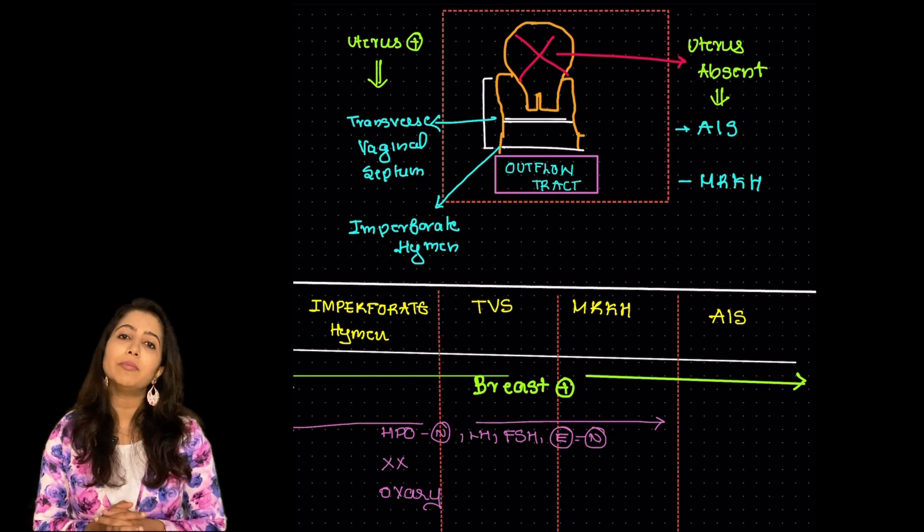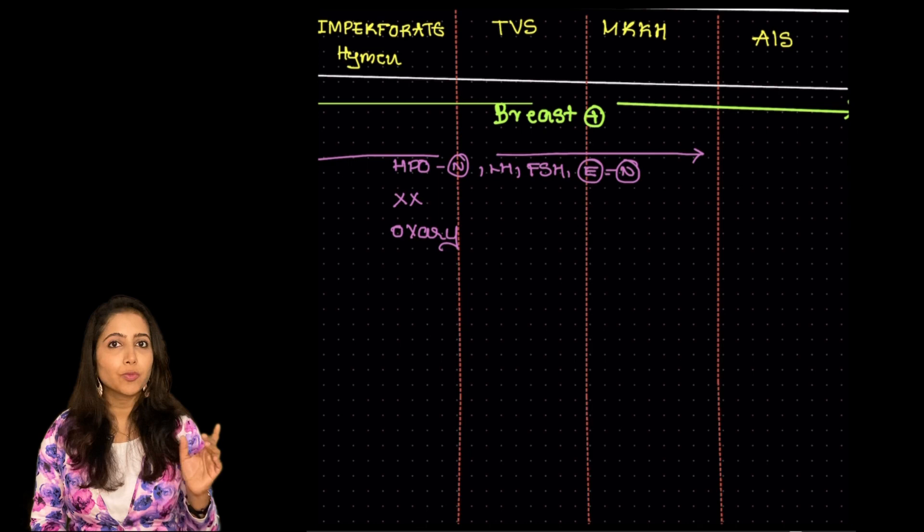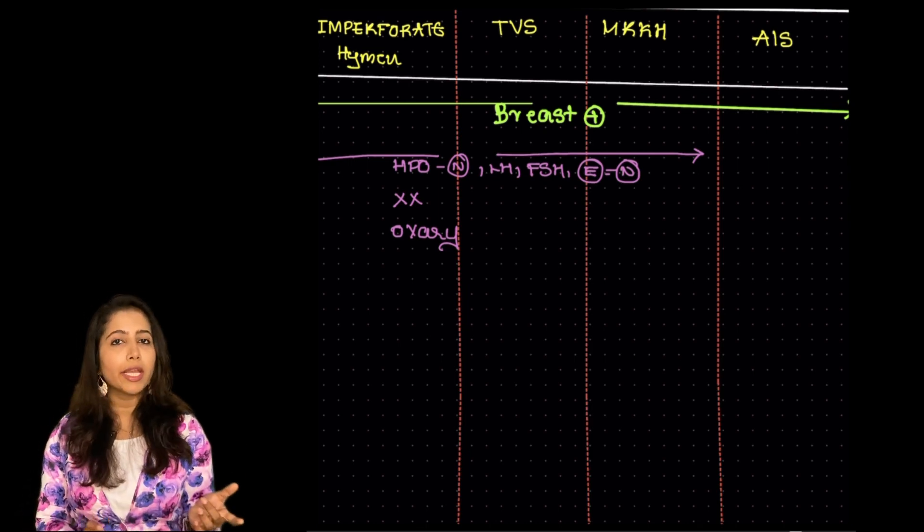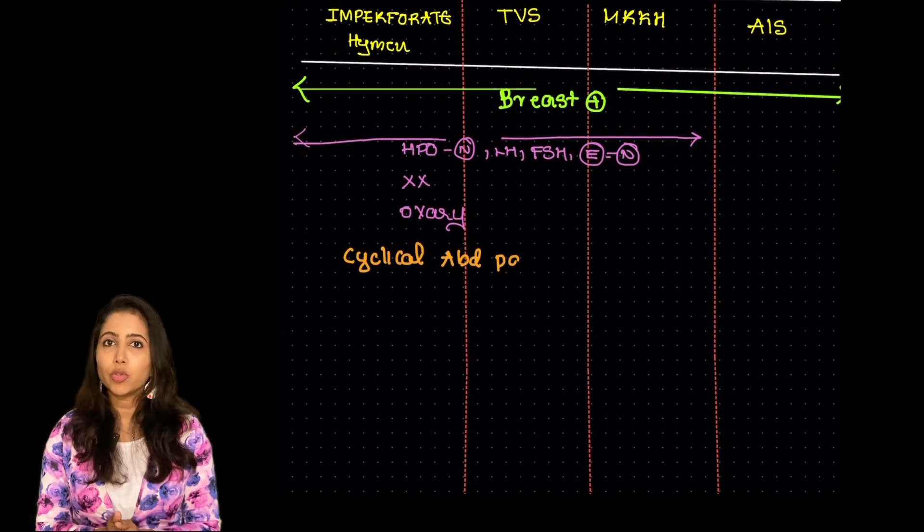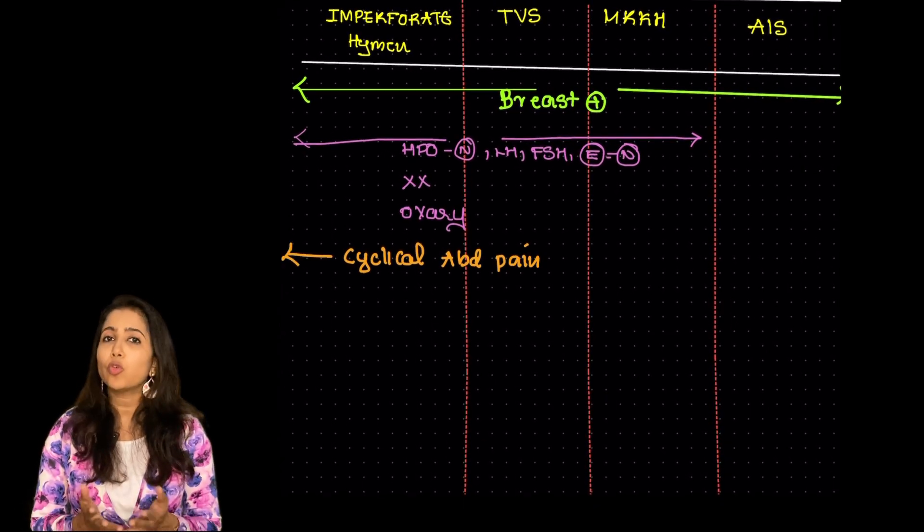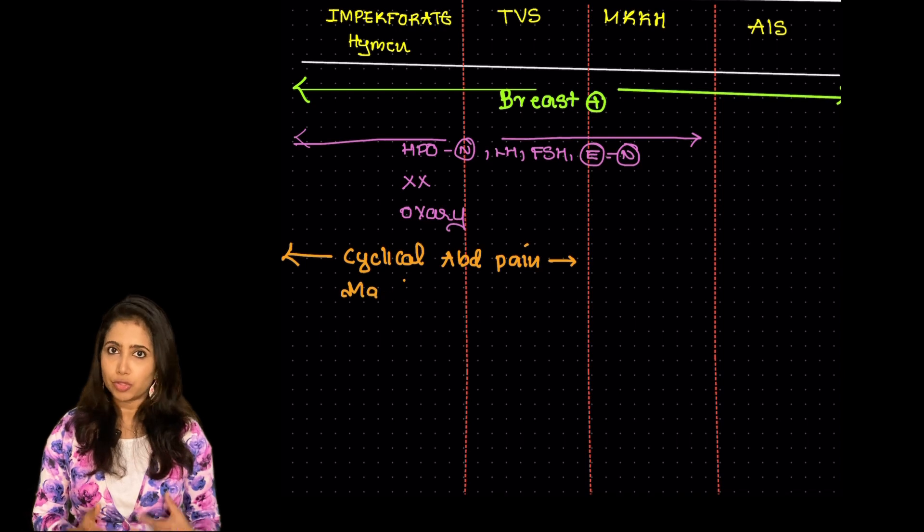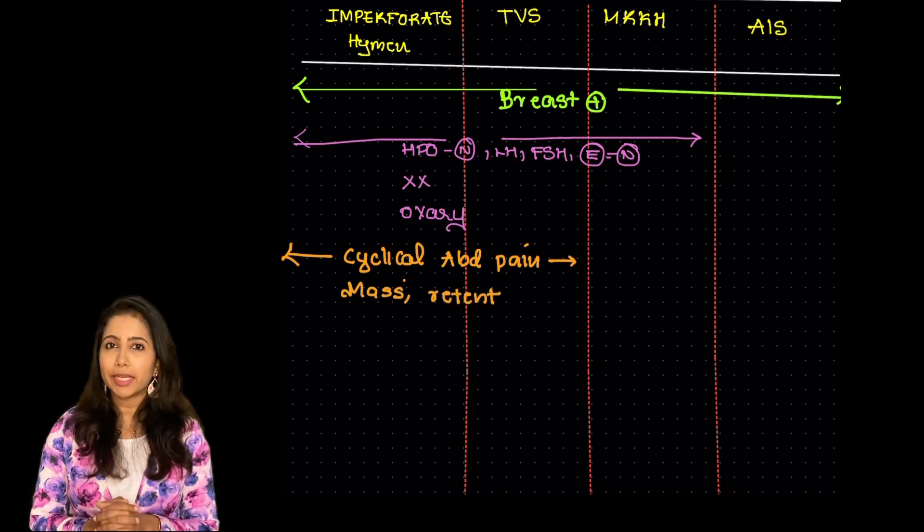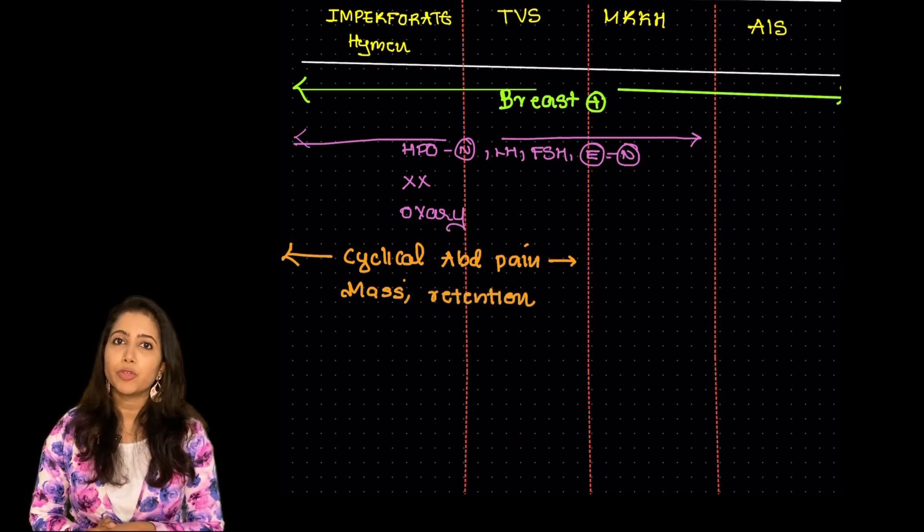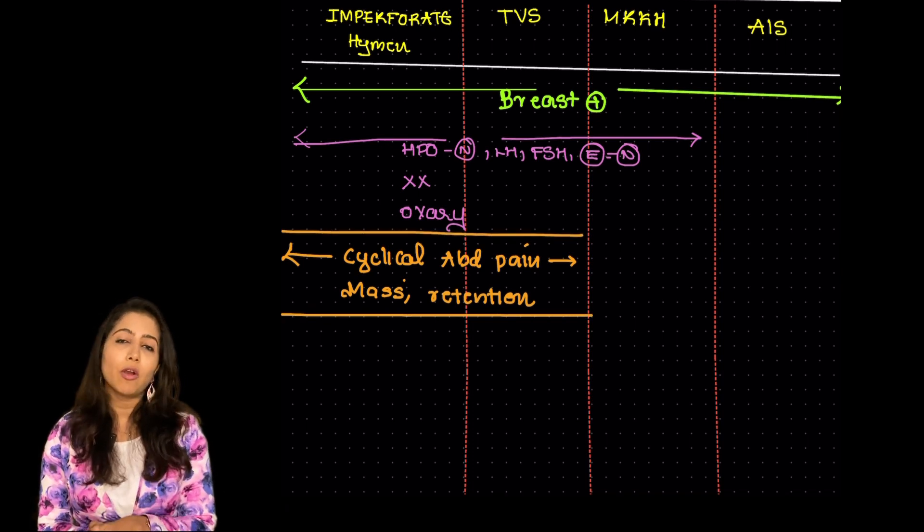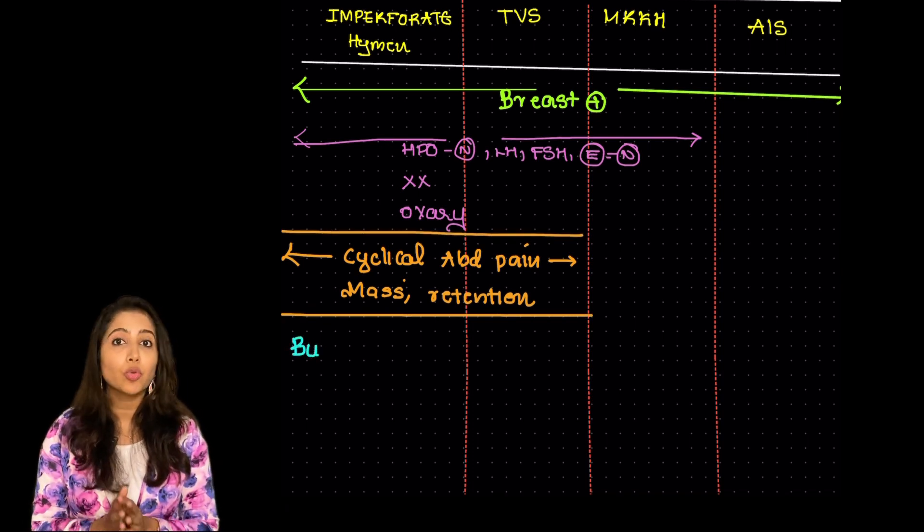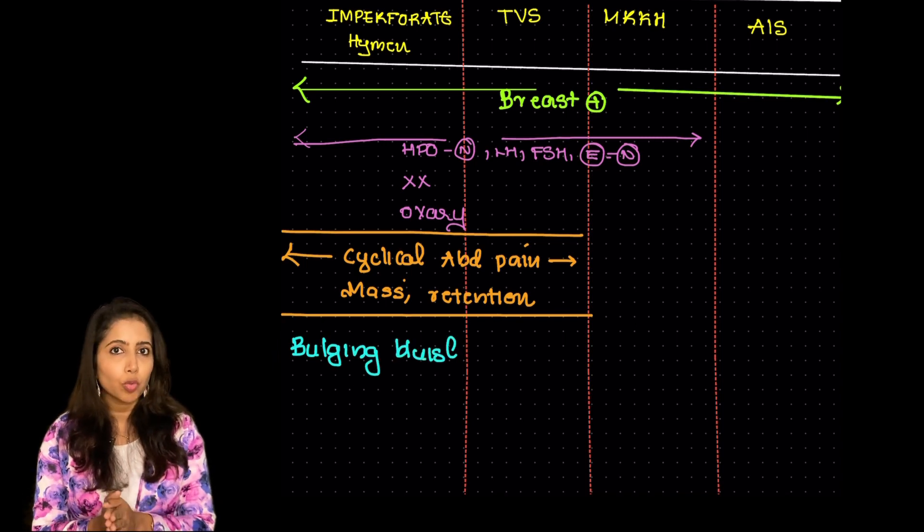The karyotype is that of a female and also the gonads would be ovaries. So how do we differentiate them? In case of a transverse vaginal septum or an imperforate hymen, the woman would be having cyclical abdominal pain due to collection of blood. There could be an abdominal mass which is due to this collection.